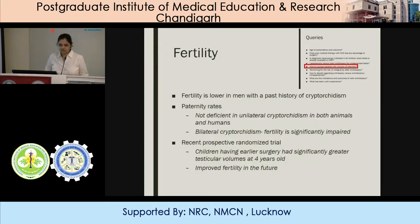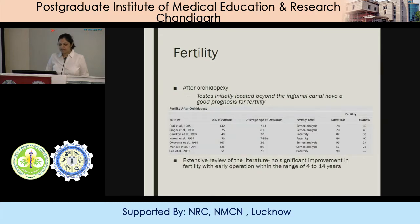Fertility is an issue with undescended testes and parents are usually concerned about it. It is lower in men with a past history of cryptorchidism, and more impaired in bilateral cryptorchidism as compared to unilateral cryptorchidism. A prospective randomized trial has shown that children having earlier surgery had significantly greater testicular volume at four years of age and improved fertility in the future. After orchiopexy, testes initially located beyond the inguinal canal have a good prognosis for fertility, although an extensive review of literature has shown no significant improvement in fertility with early operation within the range of four to fourteen years.